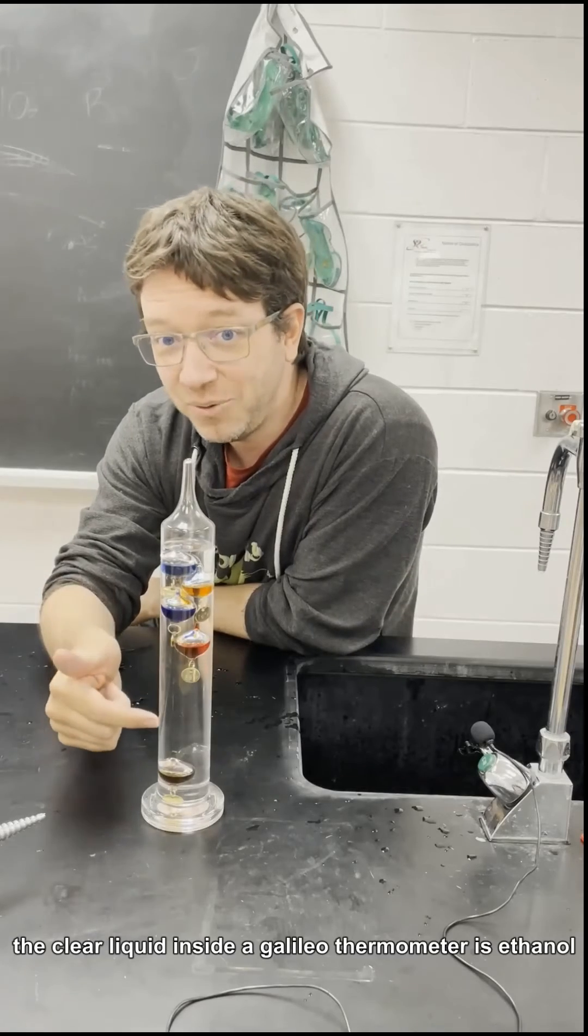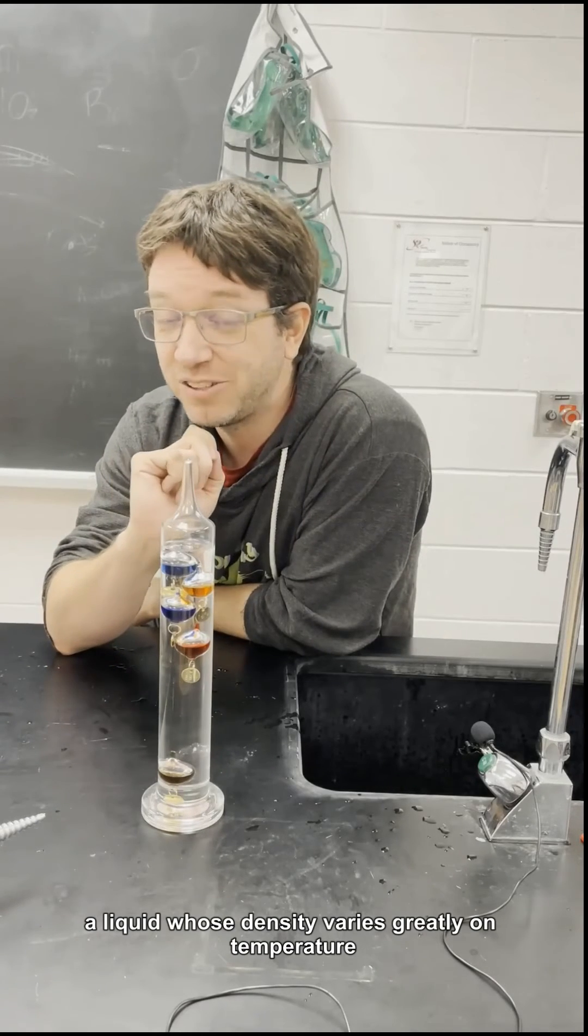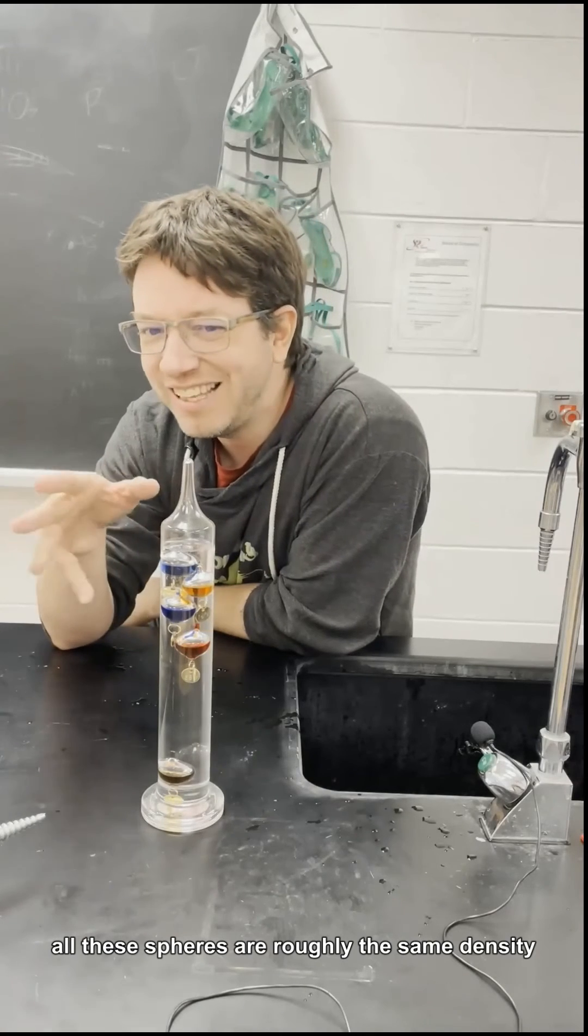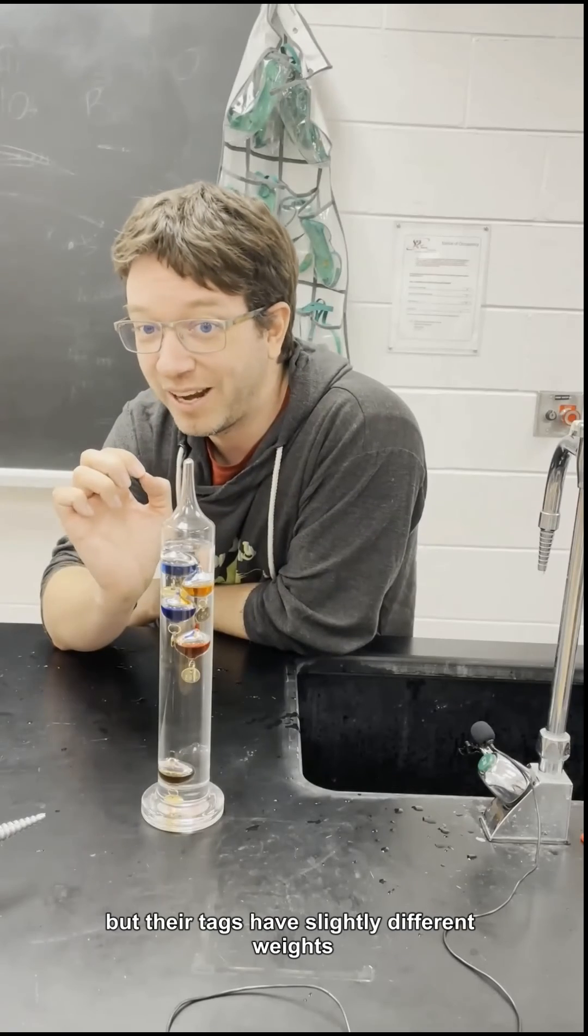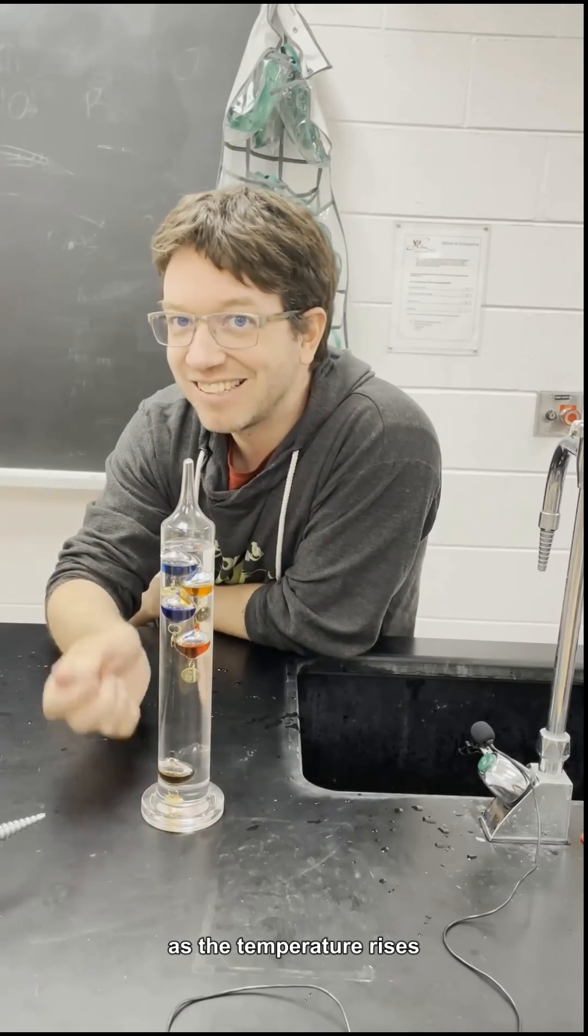The clear liquid inside a Galileo thermometer is ethanol, a liquid whose density varies greatly on temperature. All the spheres are roughly the same density, but their tags have slightly different weights. This will cause the heavier tags to fall first as the temperature rises.